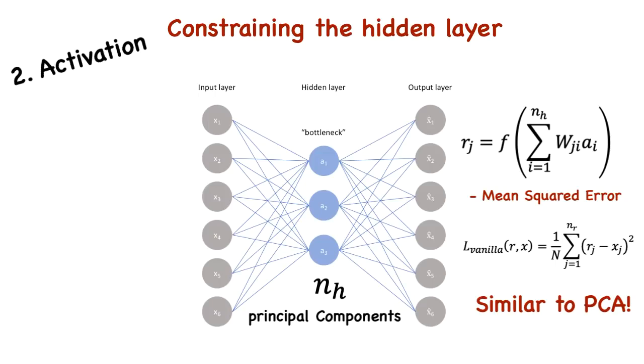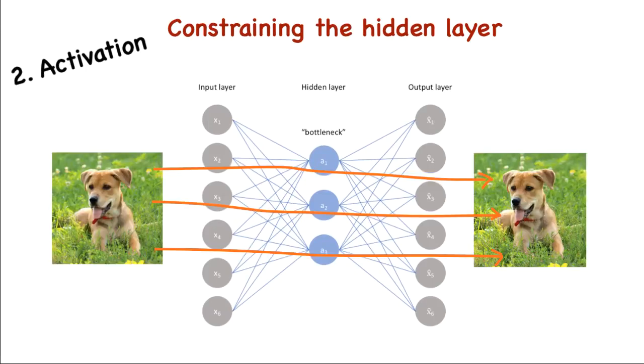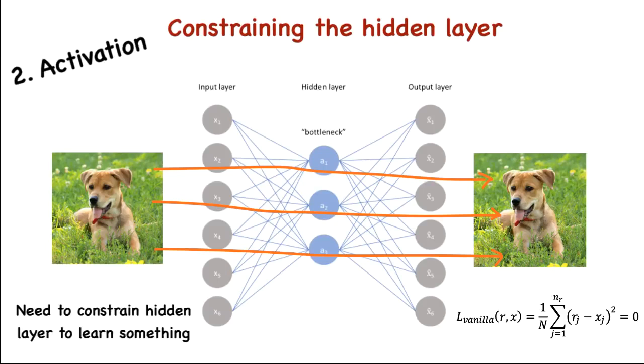But then we come back to the same problem. If H is unconstrained, it will simply copy the input to the output as that leads to a zero loss. We need to make sure that H is restrained to an extent for learning. It is important to remember that we aren't too concerned about the output of the decoder, but more of the latent representation that the autoencoder learns.